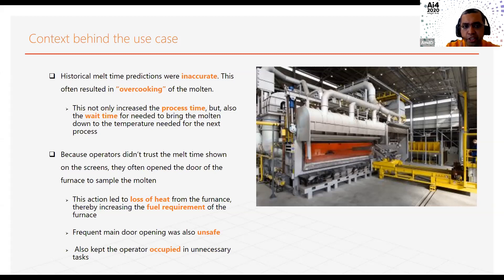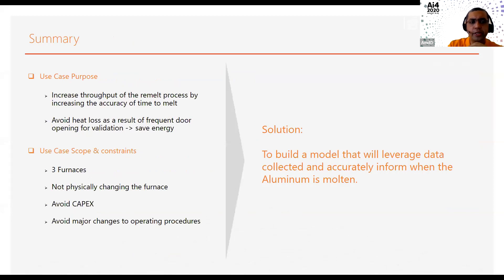If the model predictions were accurate, they didn't have to do this task. We decided to focus on this use case where our goal was to increase the throughput of our remelt process by increasing the accuracy of time to melt. In doing so, our goal was to save energy by avoiding the heat loss as a result of opening the door. The scope of this use case was one plant with three furnaces.